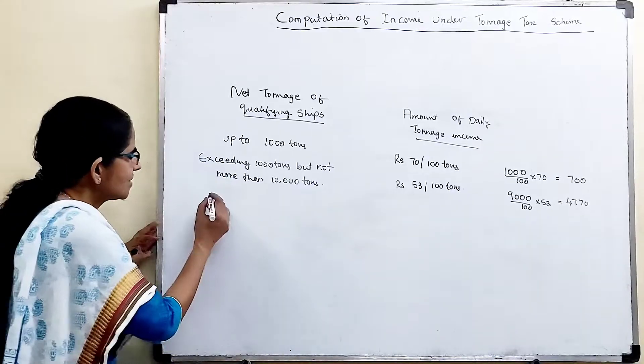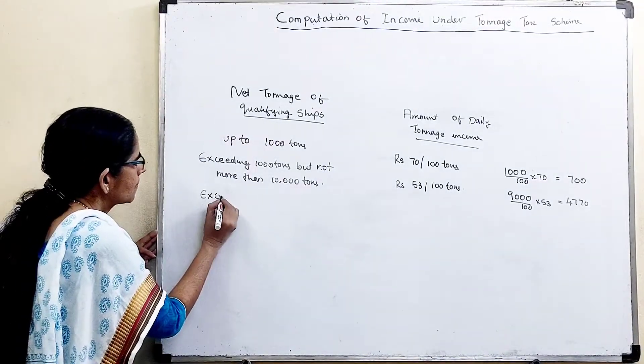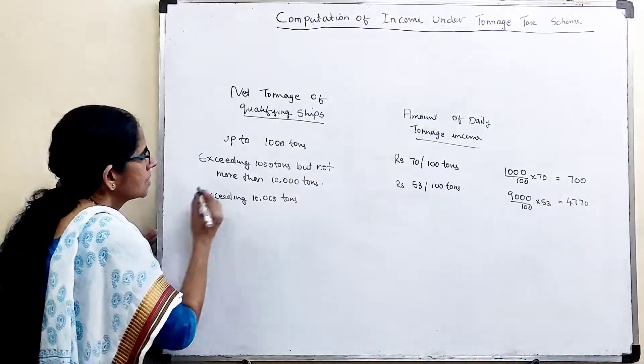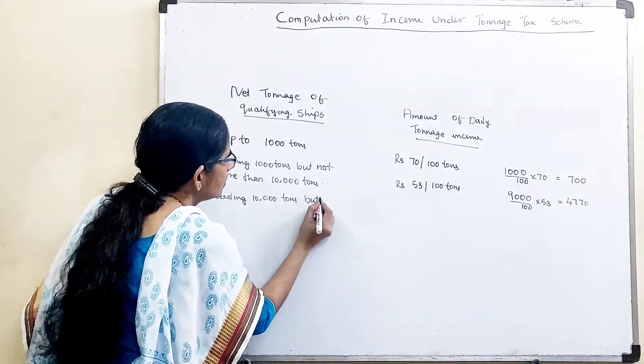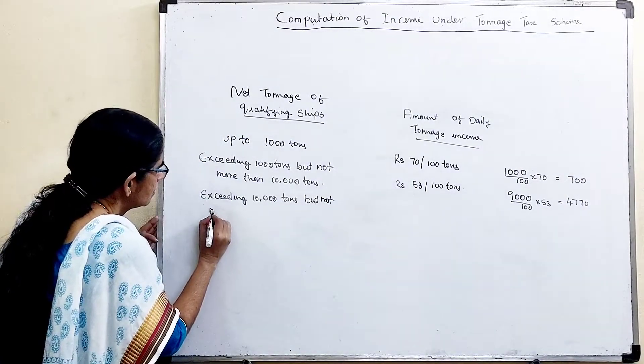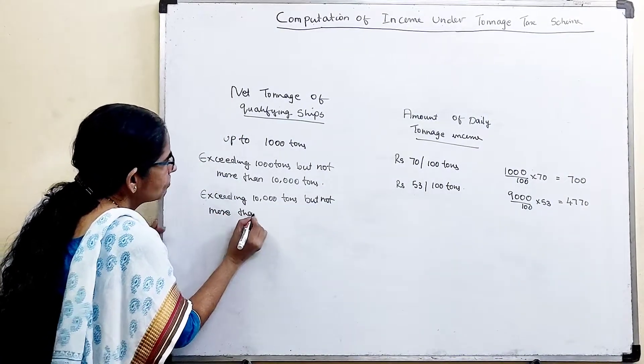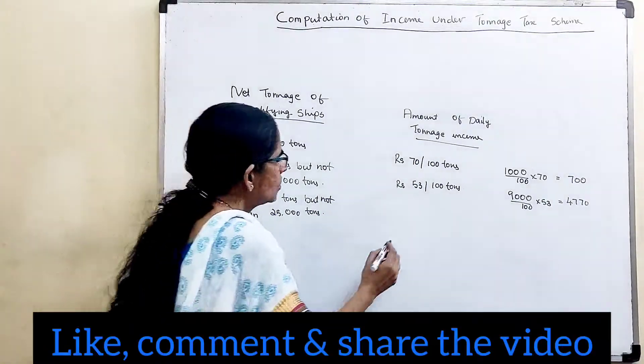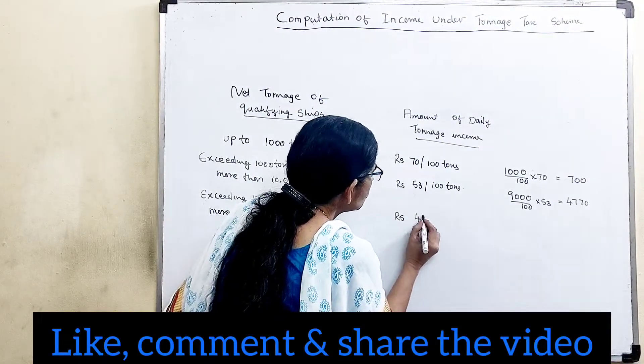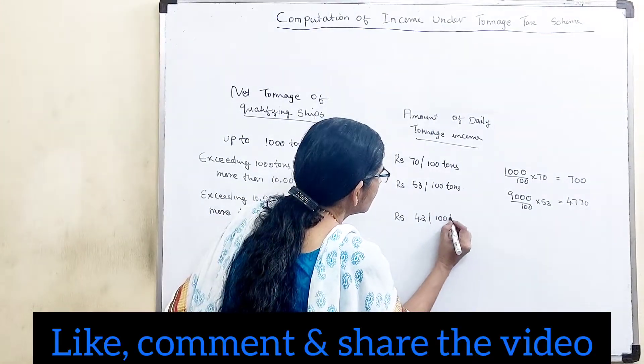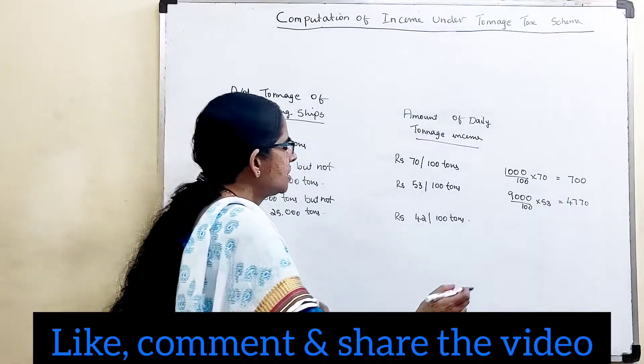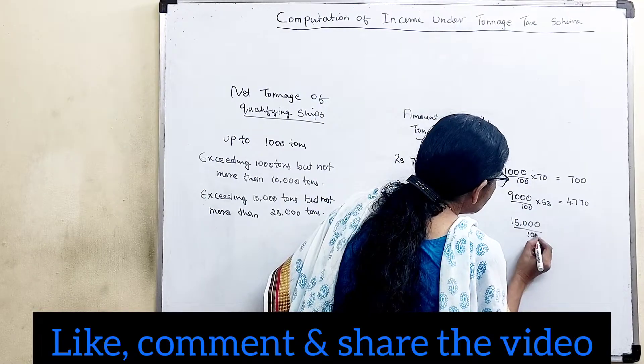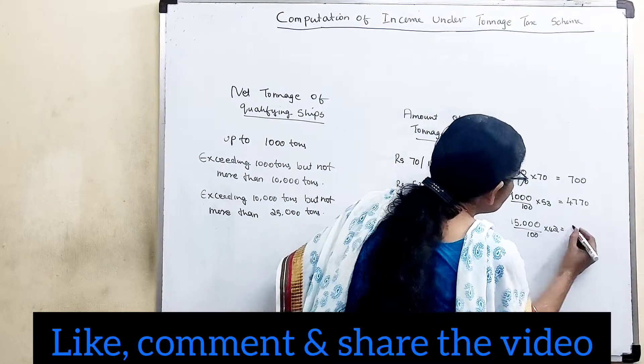The next one is exceeding 10,000 tons but not more than 25,000 tons. Rupees 42 per 100 tons. 25,000 minus 10,000 is 15,000, divided by 100 into 42, that is equal to 6,300.